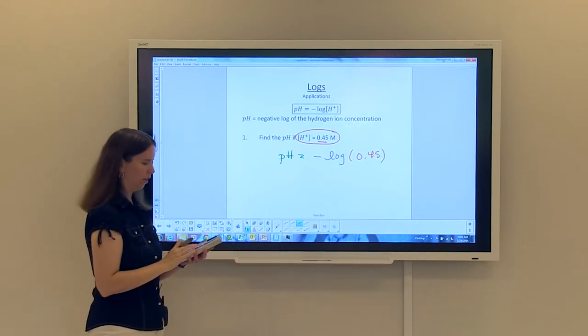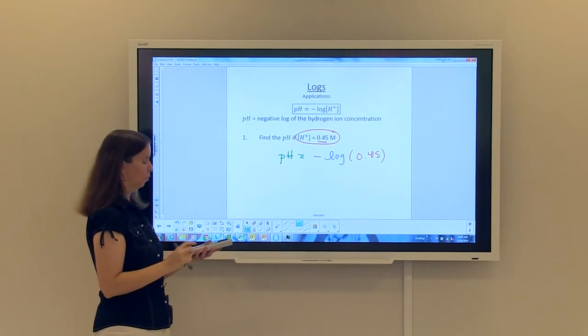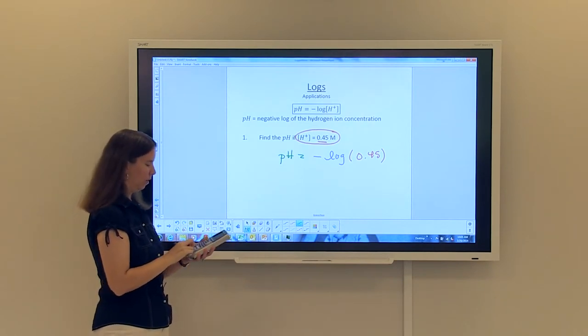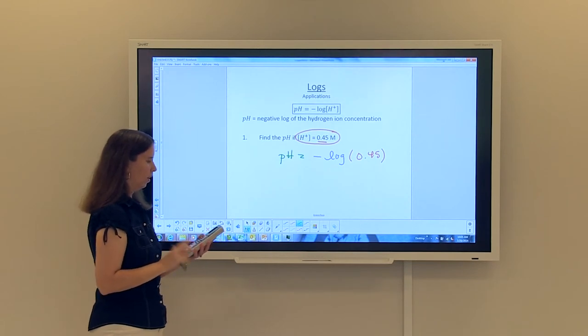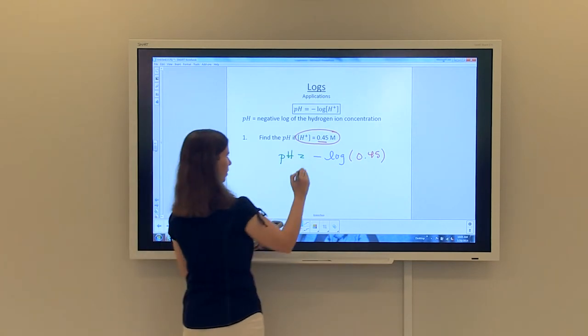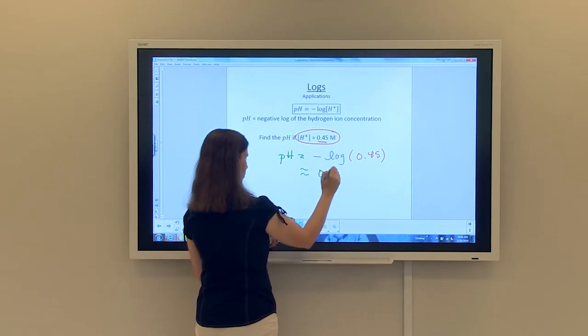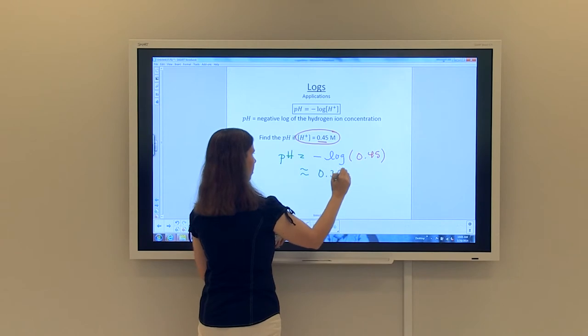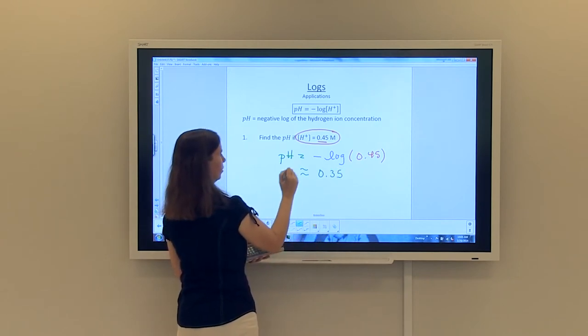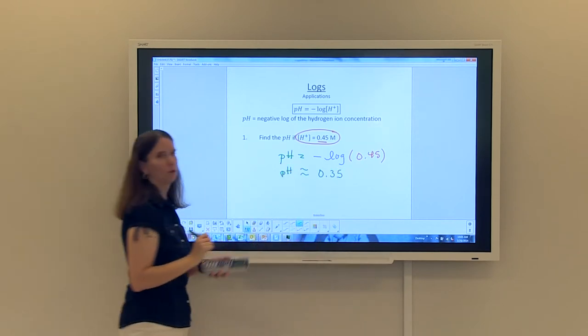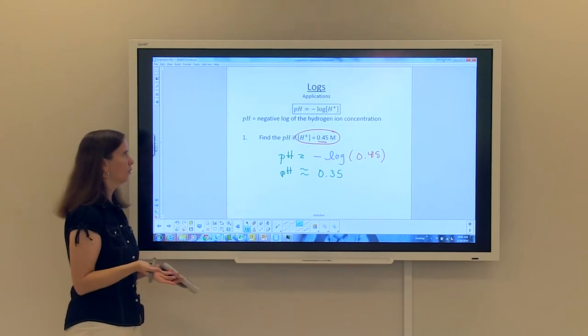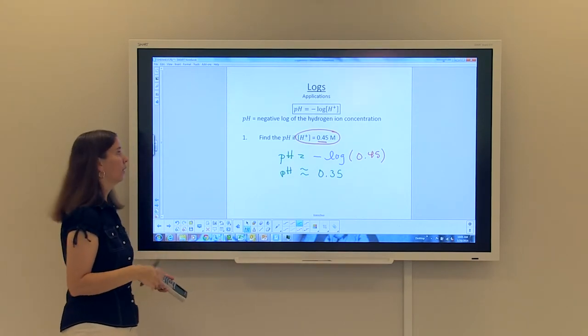All you have to do is plug it into your calculator, and you can plug it all in at one time. So negative log of 0.45 going to two decimal places will tell us that it is approximately 0.35. So we have a pH of approximately 0.35, just to use a useful application dealing with logarithms.